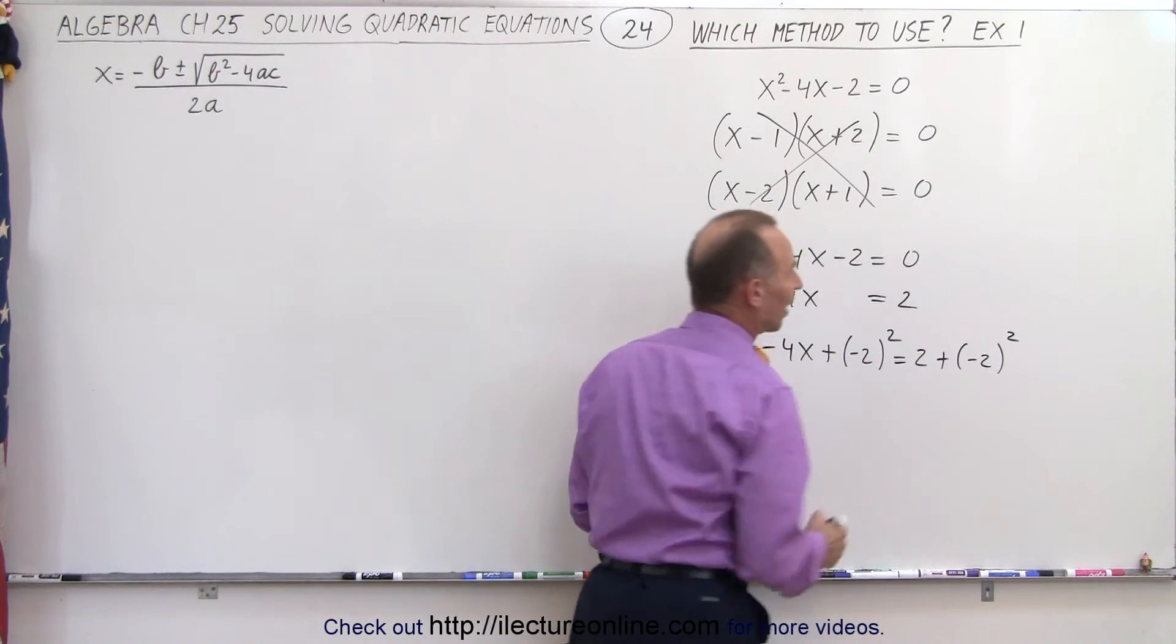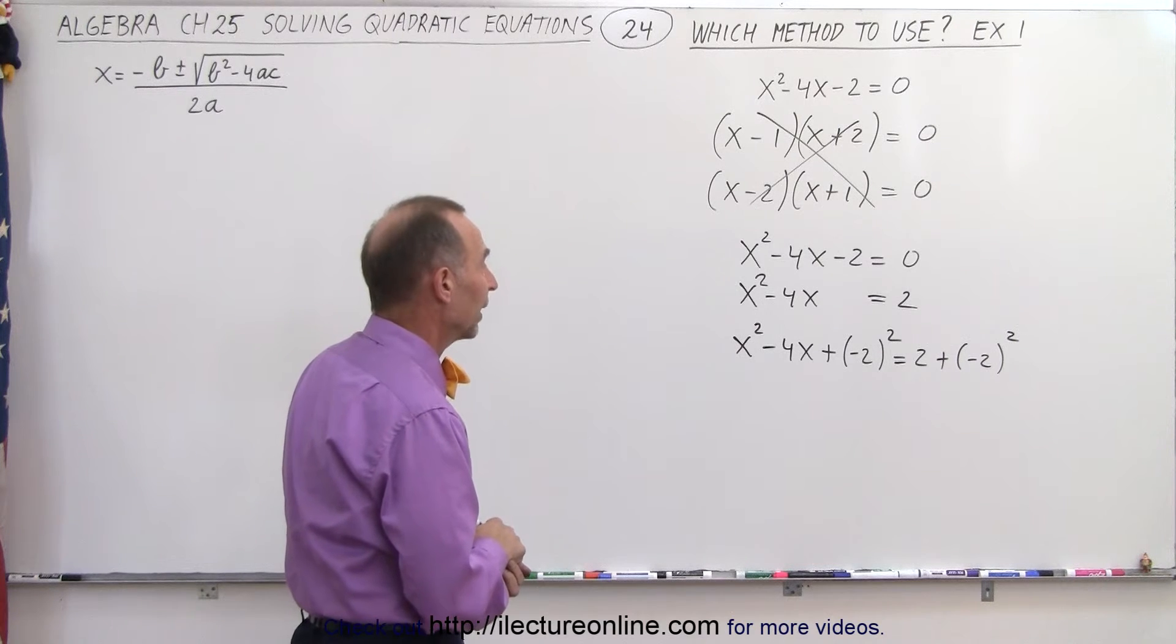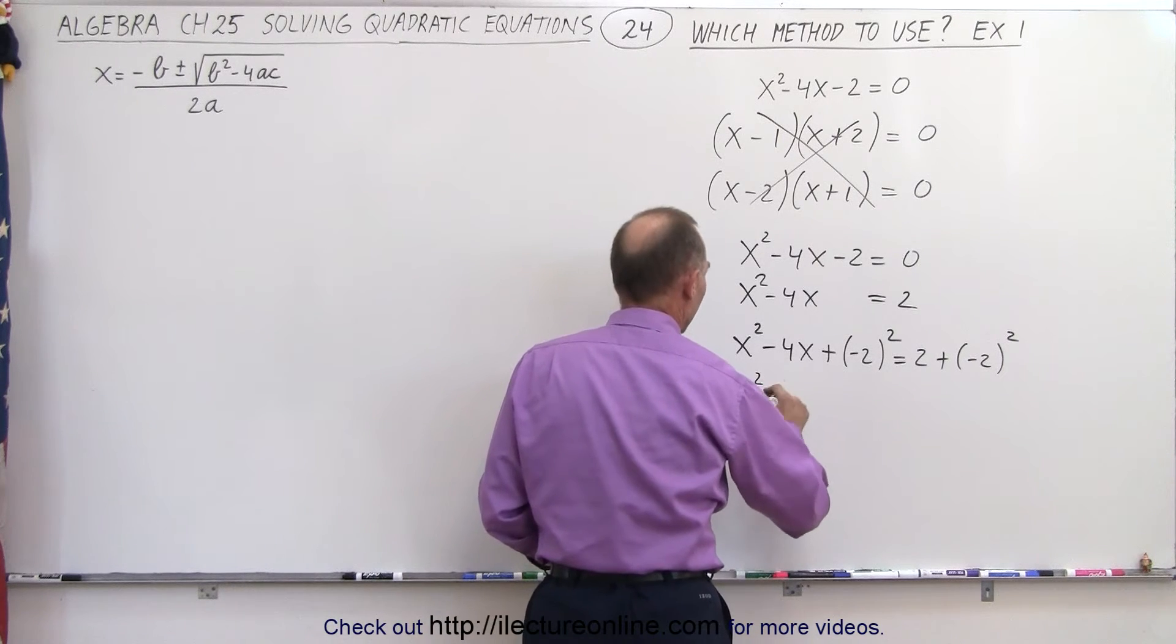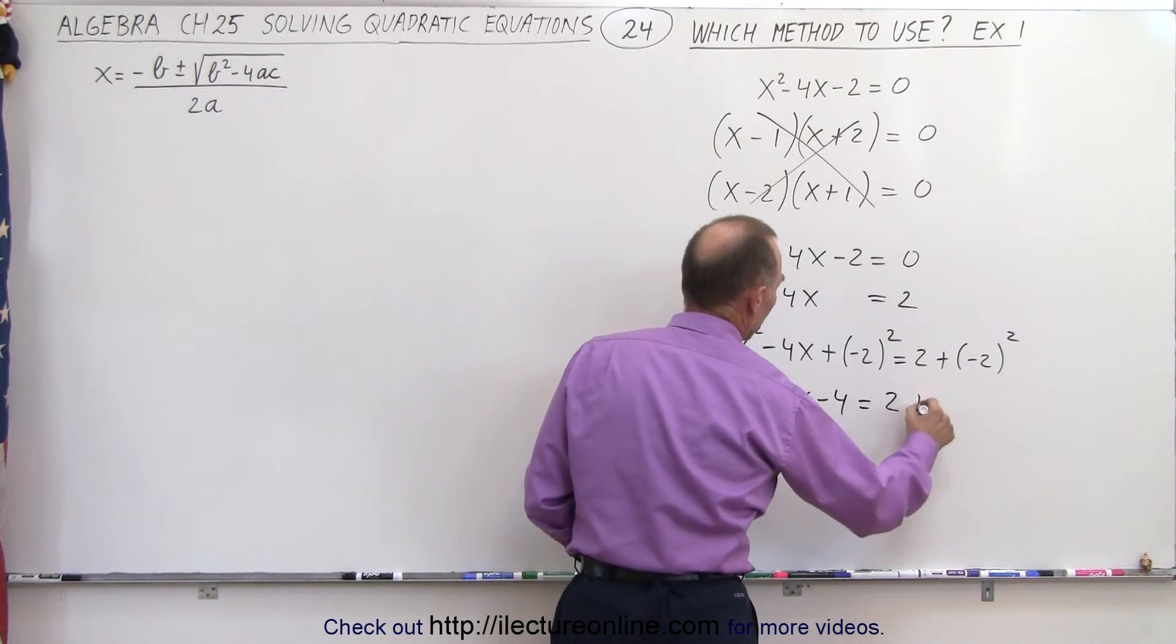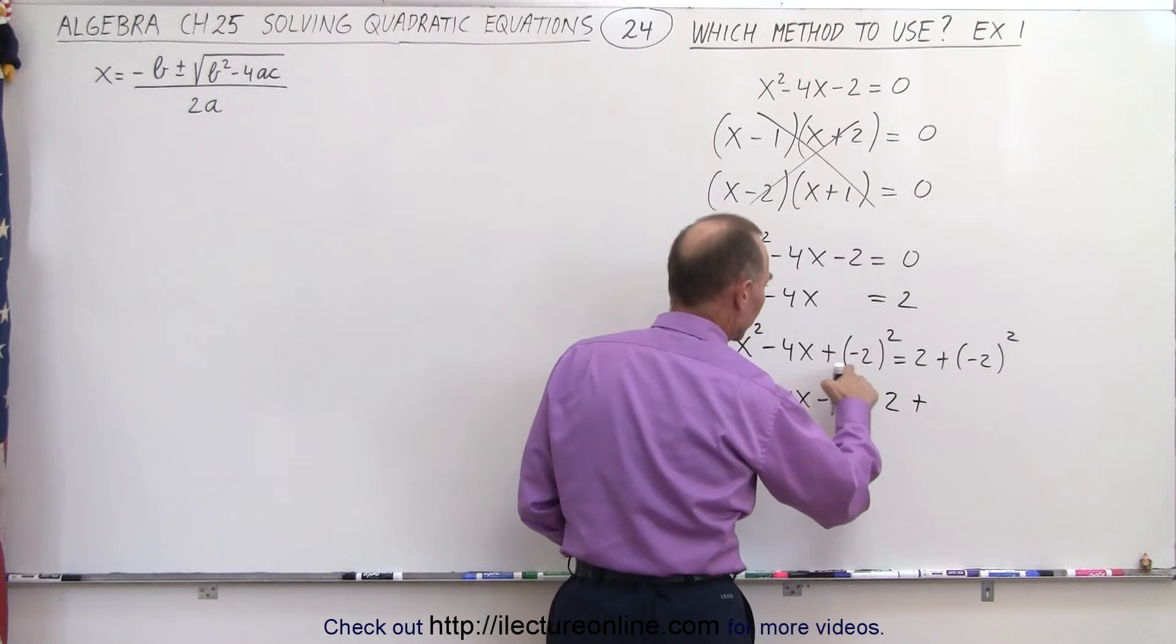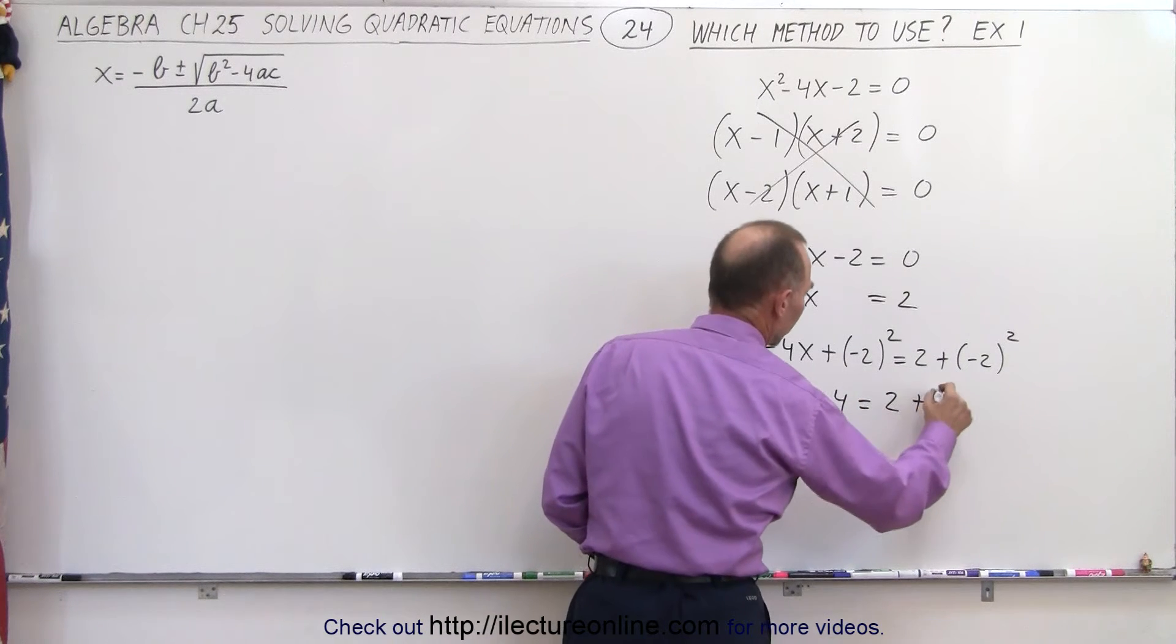So this becomes x squared minus four x minus four is equal to two plus oh no no no that will be two minus two squared that's a plus four. So plus four equals two plus four.